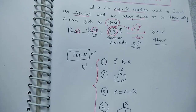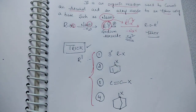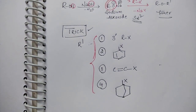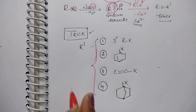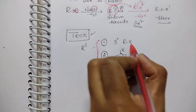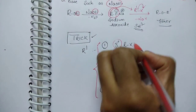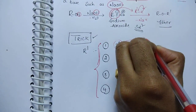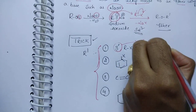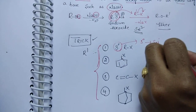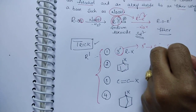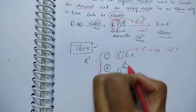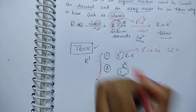The alkyl halide should not be tertiary — we know that a tertiary alkyl halide favors the SN1 mechanism, not SN2. Since Williamson ether synthesis requires SN2, a tertiary alkyl halide cannot be used.